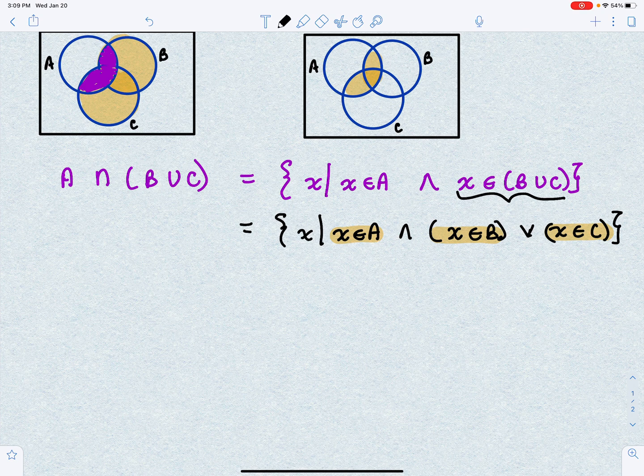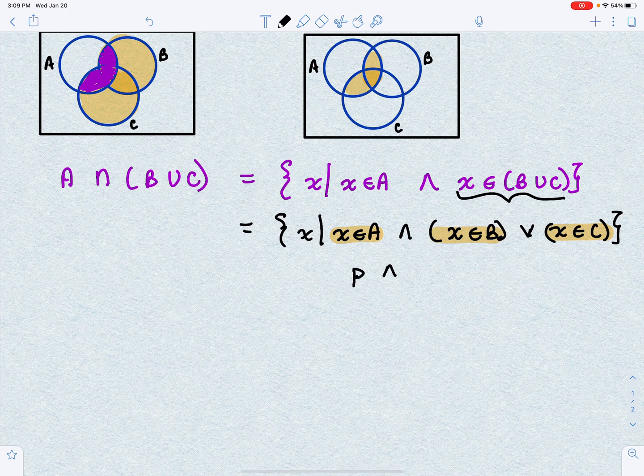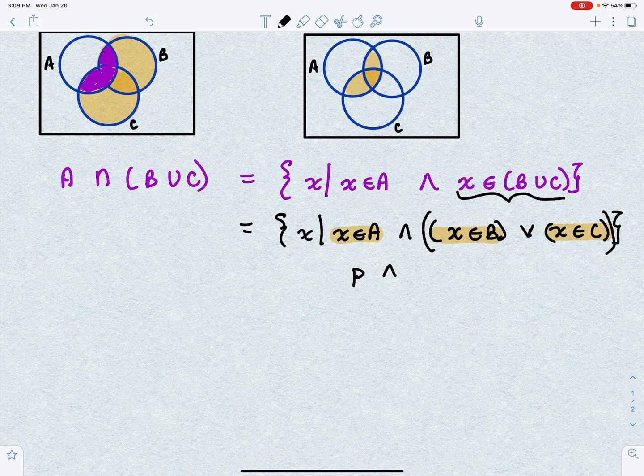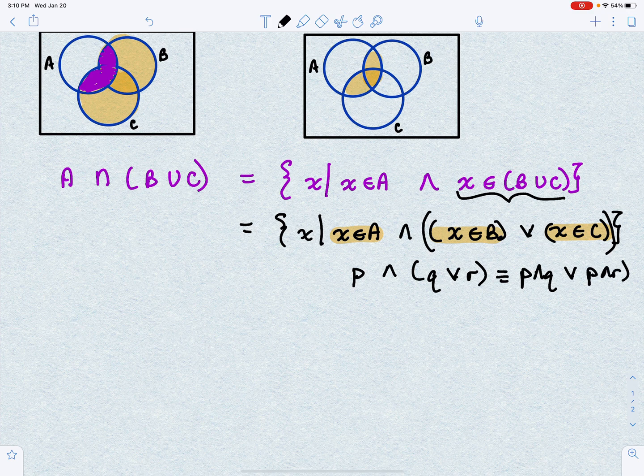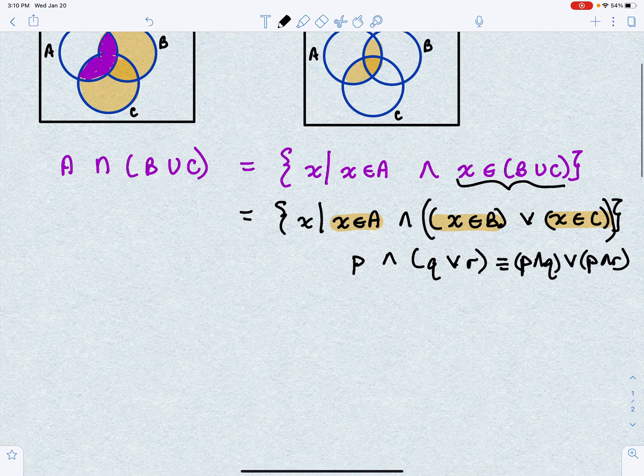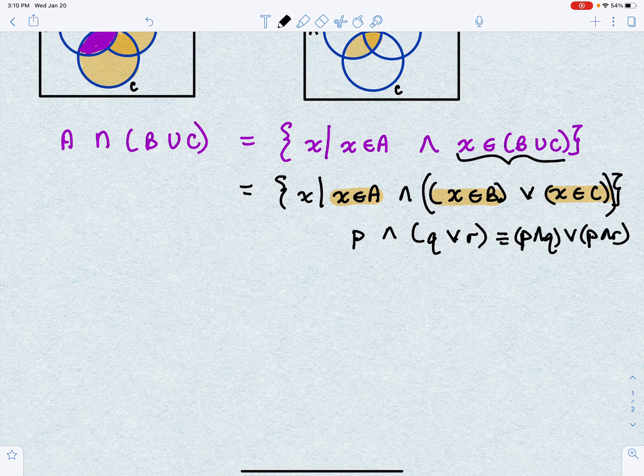And you might remember from the logical equivalence laws, we know that P, and one thing I forgot to do was put this in parentheses, this is all one thing. So P intersect Q or R is equivalent to P and Q or P and R. So you notice that this just boils down to just distributing ands and ors.